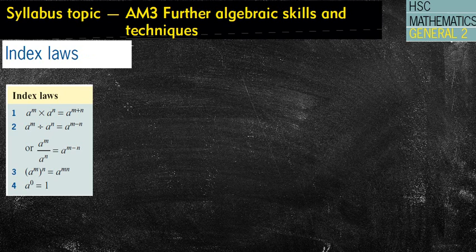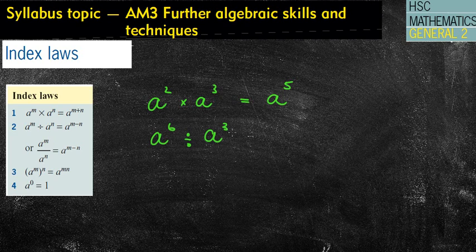The first law is if you multiply the bases, then we simply add the powers. For example, we could have a squared times a³, which then gives you a to the power of 5. You could have for the division one, a to the power of 6 divided by a to the power of 3. Whenever you are dividing the bases, then you simply subtract the actual indices. That gives you a to the power of 3, because 6 take away 3 is 3.